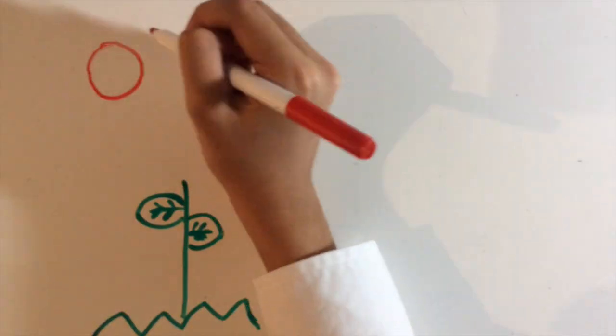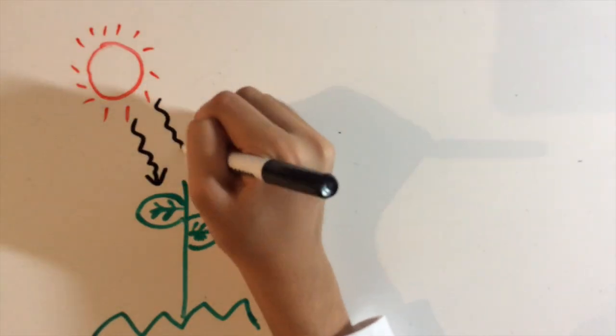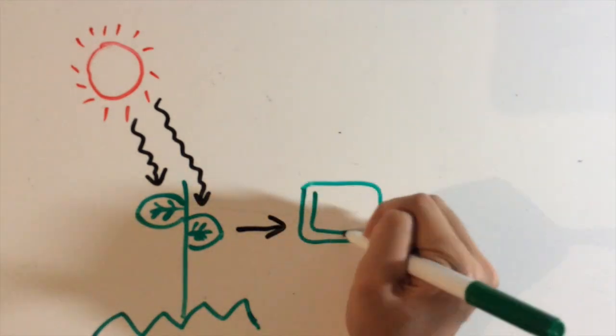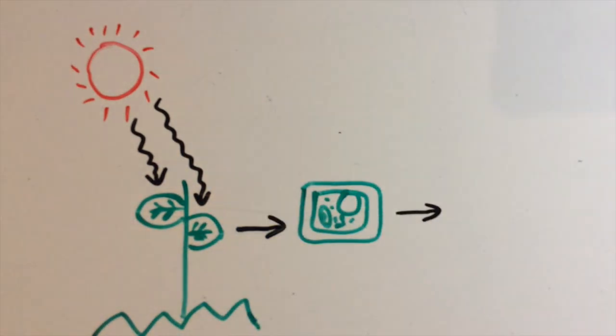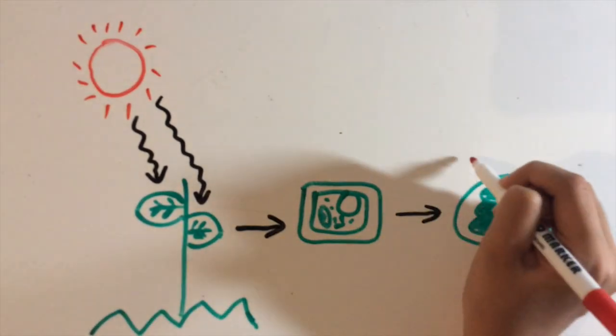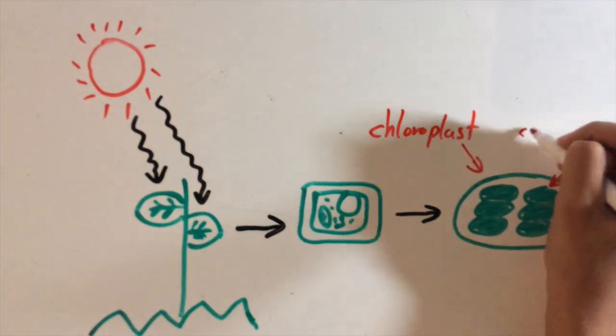It all starts with energy from the sun being captured in chlorophylls and chloroplasts. Chloroplasts are organelles located in plant cells. And chlorophylls are pigments, which are colored chemical compounds that absorb light. It's also what gives plants and leaves color.